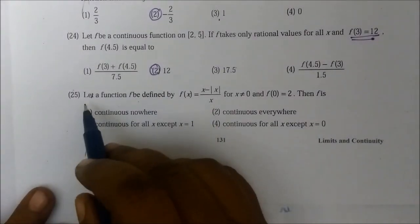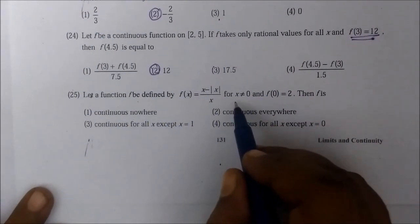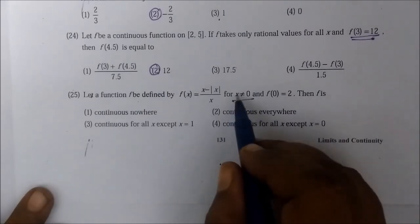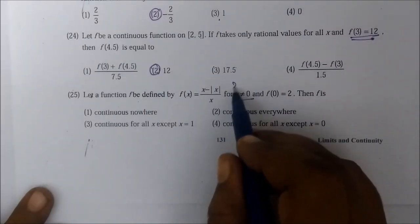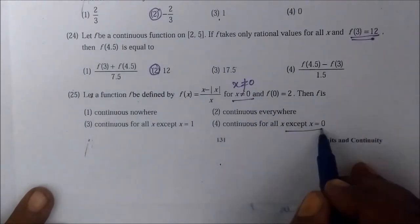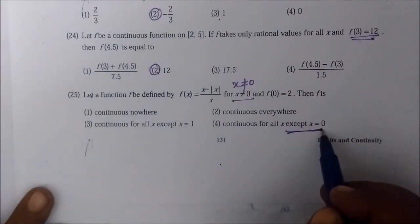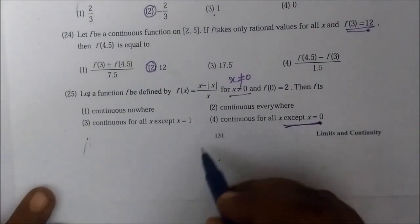Question number 25. This is easy. The answer is x not equal to 0. That means what? Except x equal to 0. X not equal to 0 means except x equal to 0. Answer is correct.